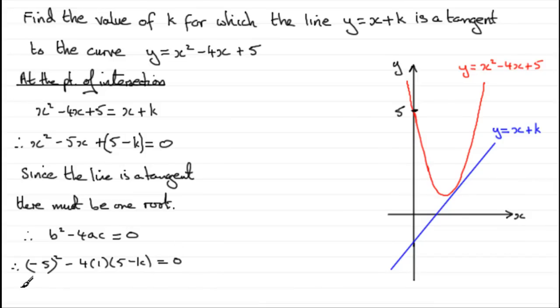So what we've got here is therefore minus 5 squared is 25, then we've got minus 4 times 5 which is minus 20, and then minus 4 times minus k is plus 4k, and that equals zero. So 25 minus 20 which is 5, so we've got 5 plus 4k equals zero.